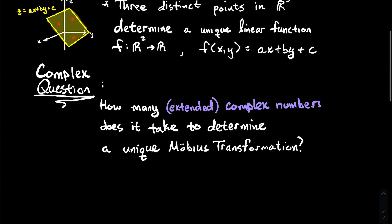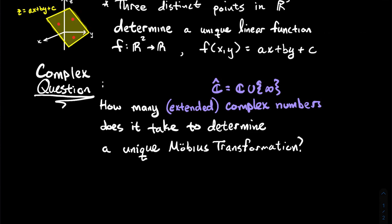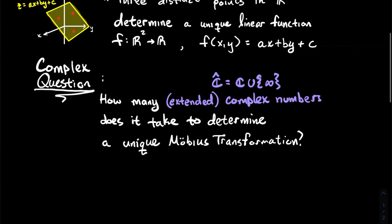So how many extended complex numbers does it take to determine a unique Möbius transformation? Recall the extended complex numbers, denoted by ℂ̂. We take the ordinary complex numbers like a + bi, and we throw in the symbol infinity. The way the complex numbers interact with infinity follows limit ideas, so a complex number divided by zero equals infinity instead of being undefined.